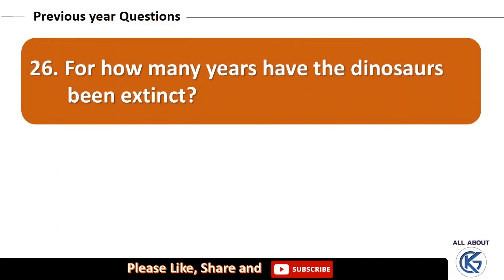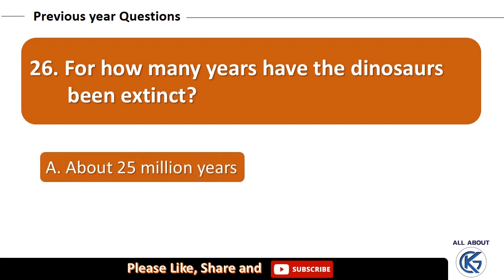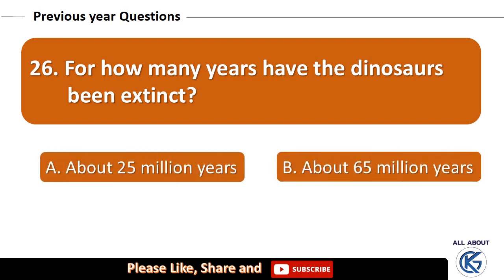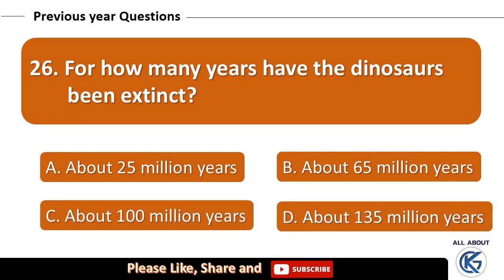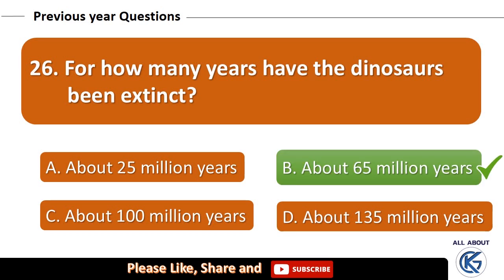For how many years have the dinosaurs been extinct? About 25 million years, about 65 million years, about 100 million years, or about 135 million years? The right answer is about 65 million years.